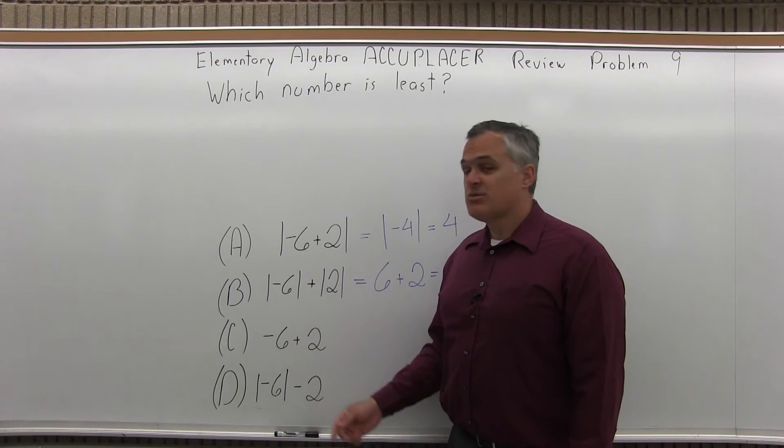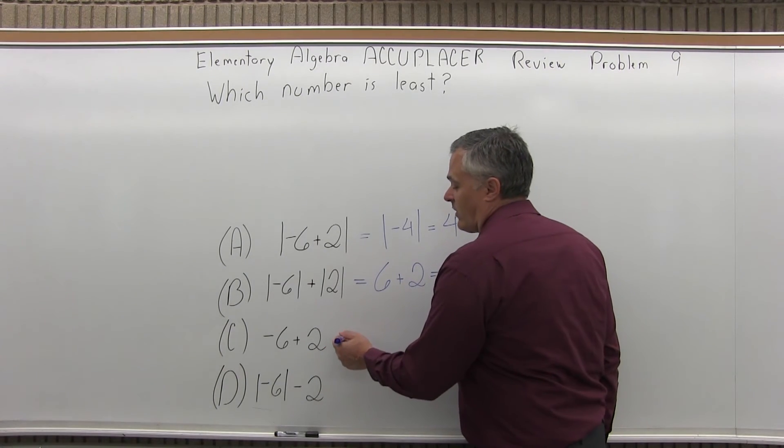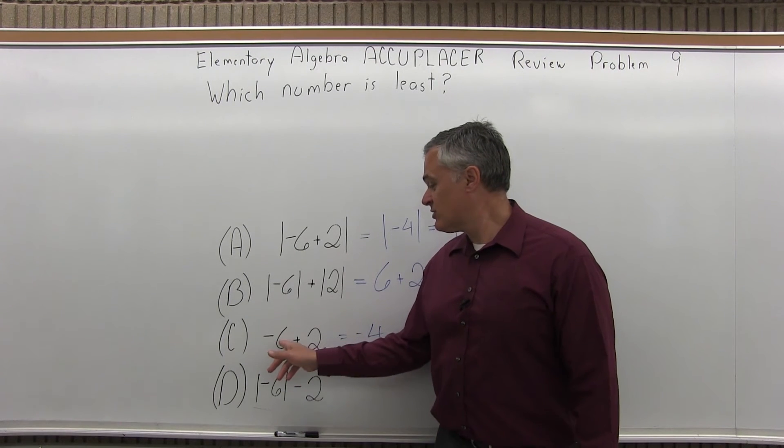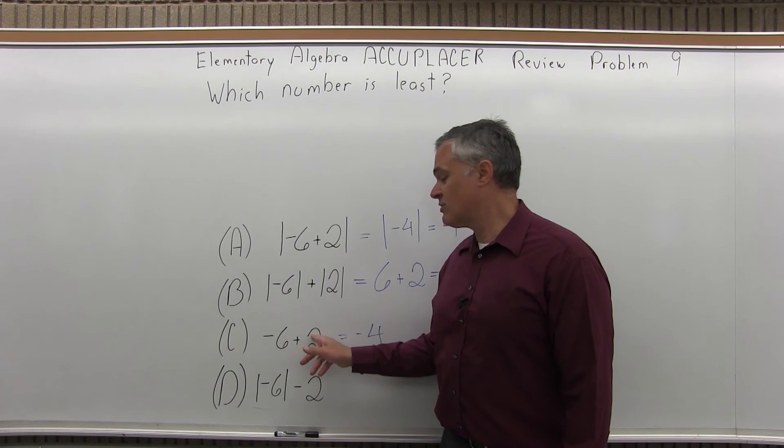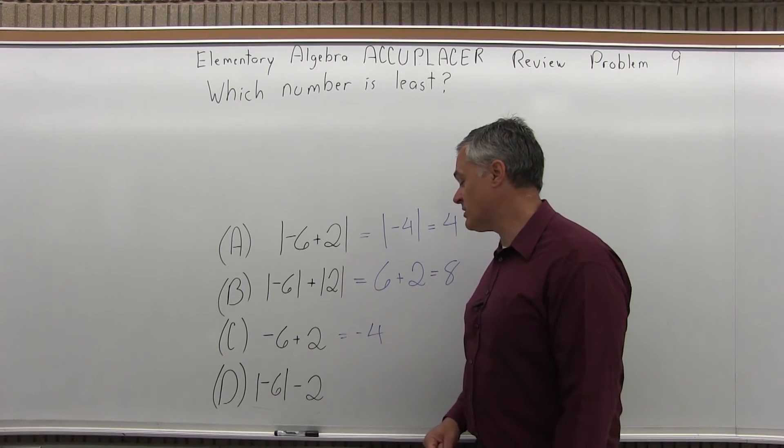Option C is negative 6 plus 2 with no absolute value. So again that's going to be negative 4. With signed numbers you can think of it like temperature. If it's 6 degrees below 0 and the temperature increases by 2 degrees, it is now 4 below 0. Still cold, but not as cold as the 6 below 0.